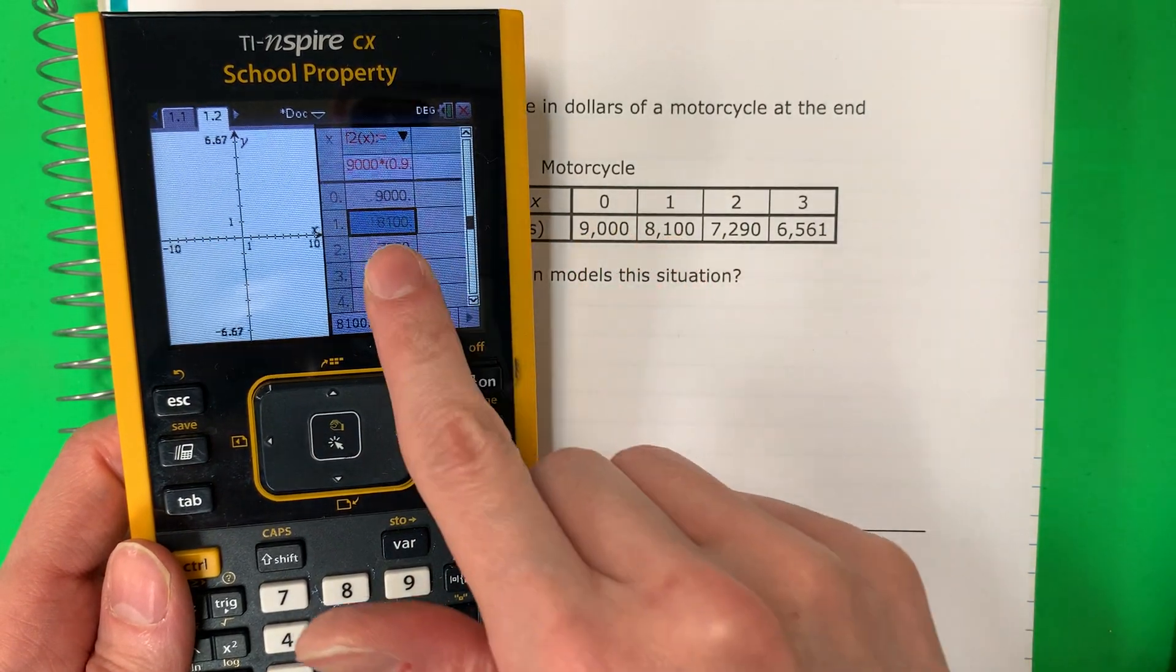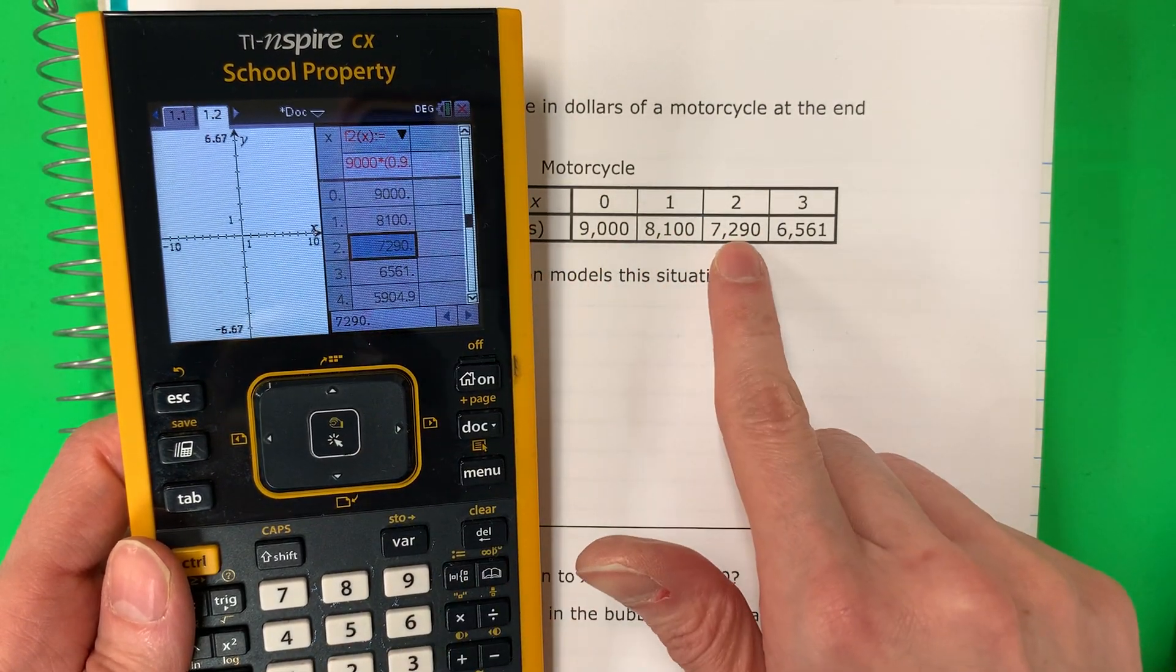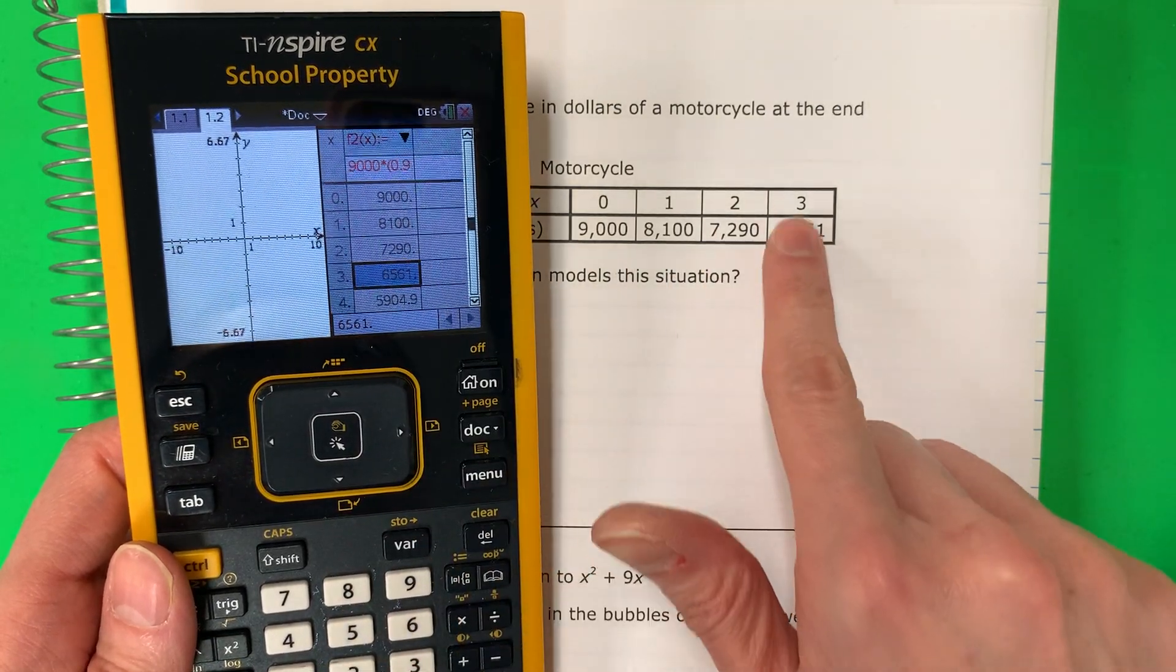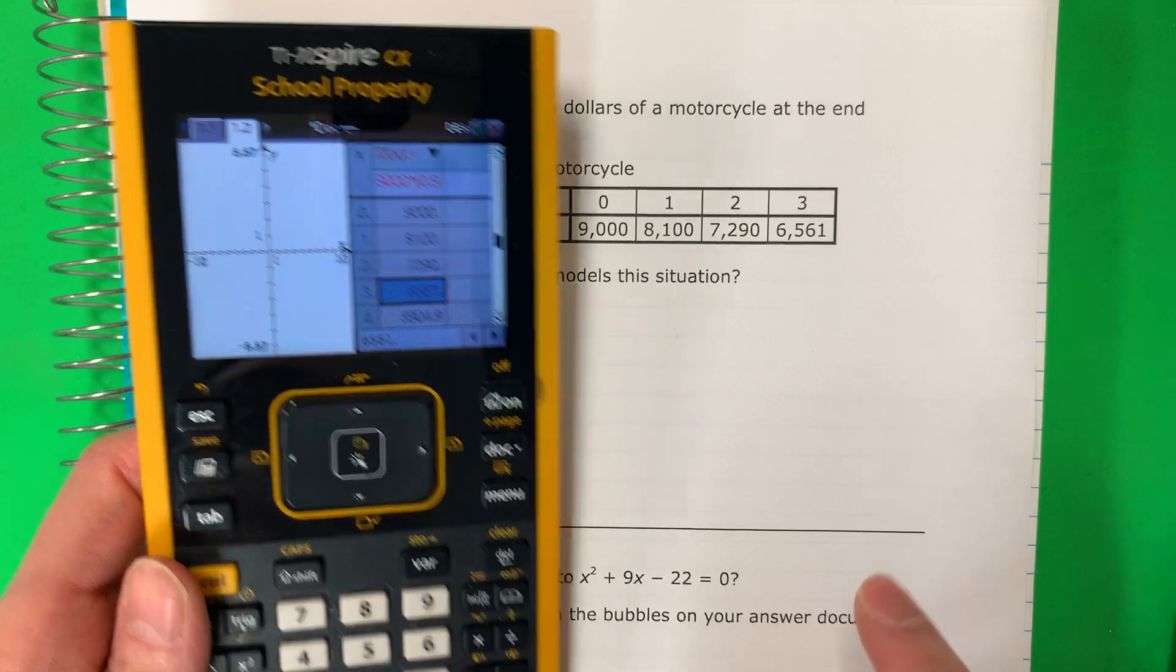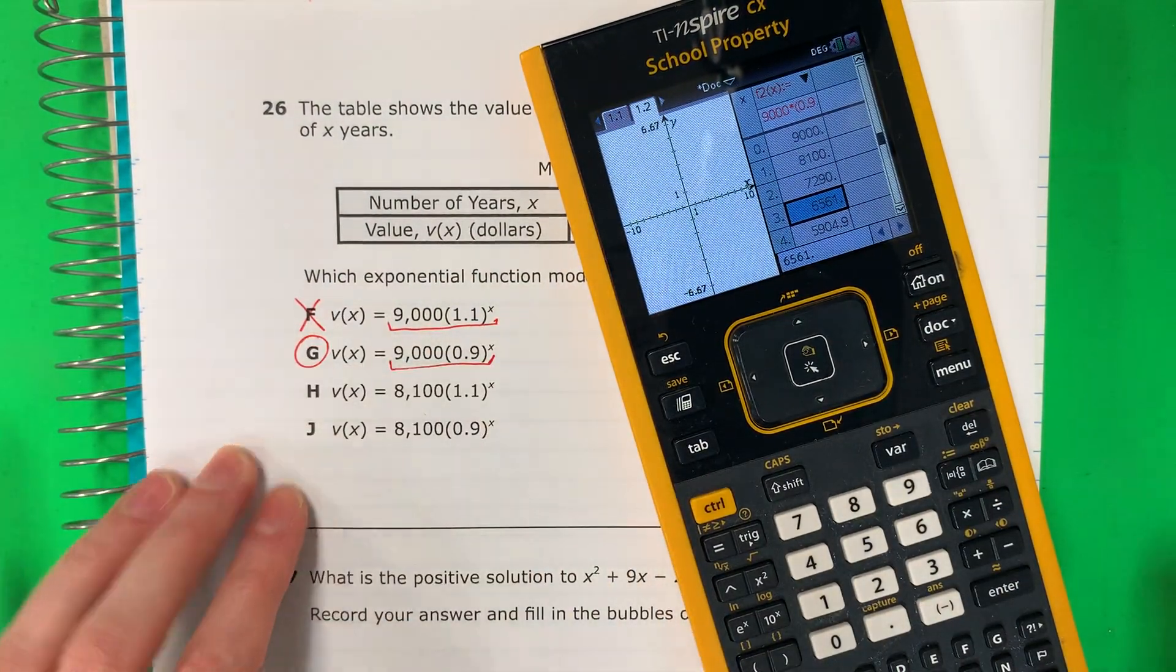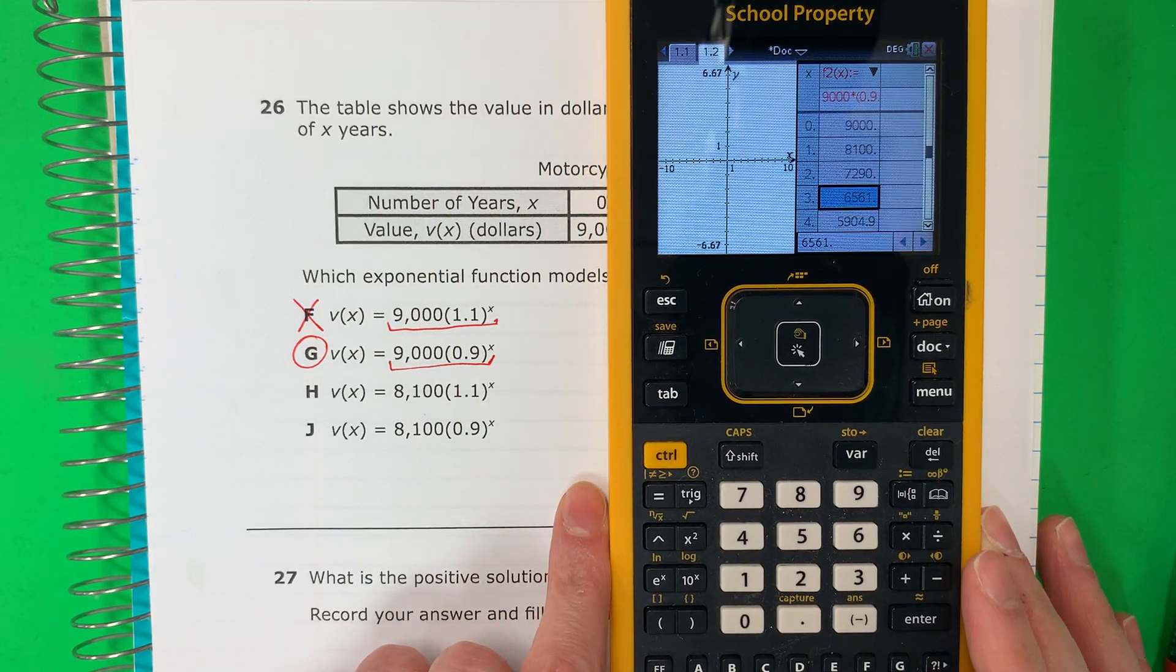8,100. Perfect. The same. Let's check two. 7,290. Good. The same. Igual. Three. 6,561. The same. Igual. These are all the same. Todos son iguales. So your answer is G. La respuesta es G. That is your answer. I need them all the same. Quiero todos iguales.